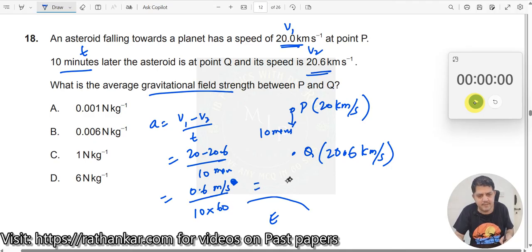So when I do this, what do I get here? I get this as 0.6 divided by 600, which would be, which is 0.1 divided by 100, which is equal to 10 to the power of minus 3.